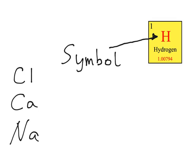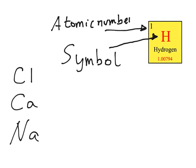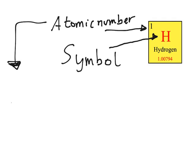The number that you can see above the symbol is called the atomic number. What the atomic number tells you is the number of protons in that element. So for hydrogen, it will only have one proton. In nuclear notation, we represent the atomic number with the letter Z.